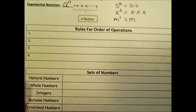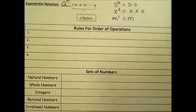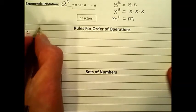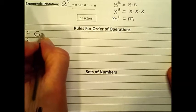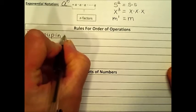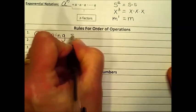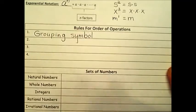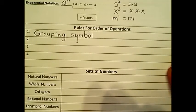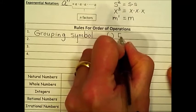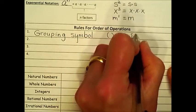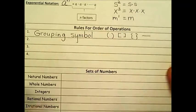The foundation of any math, regardless of what type it is, is based on the rule for order of operations. And our first order of operations is grouping symbols. Anything inside the parentheses. We work from the innermost symbol out. This could be parentheses, braces or brackets. Even a division line acts like a grouping symbol.